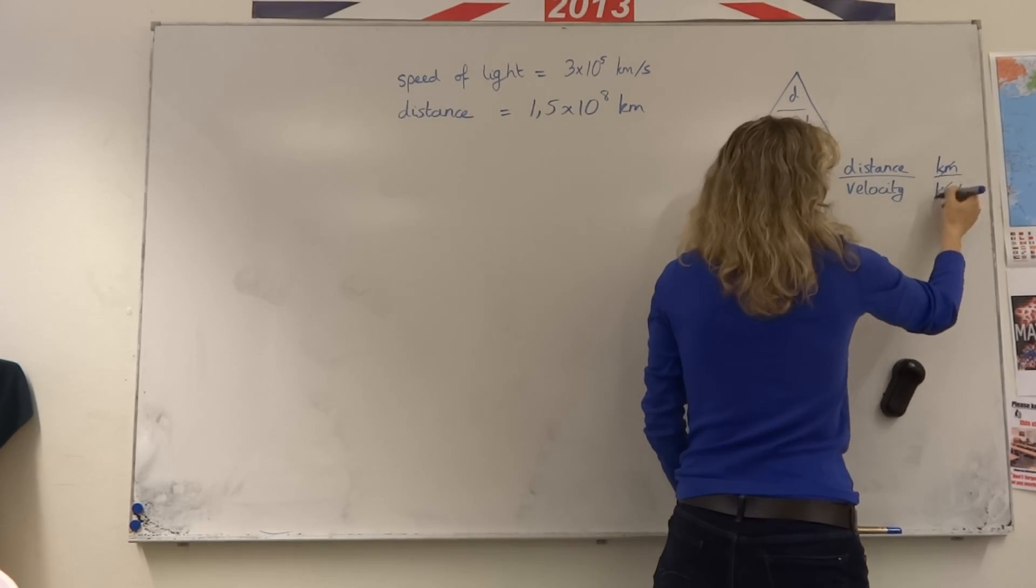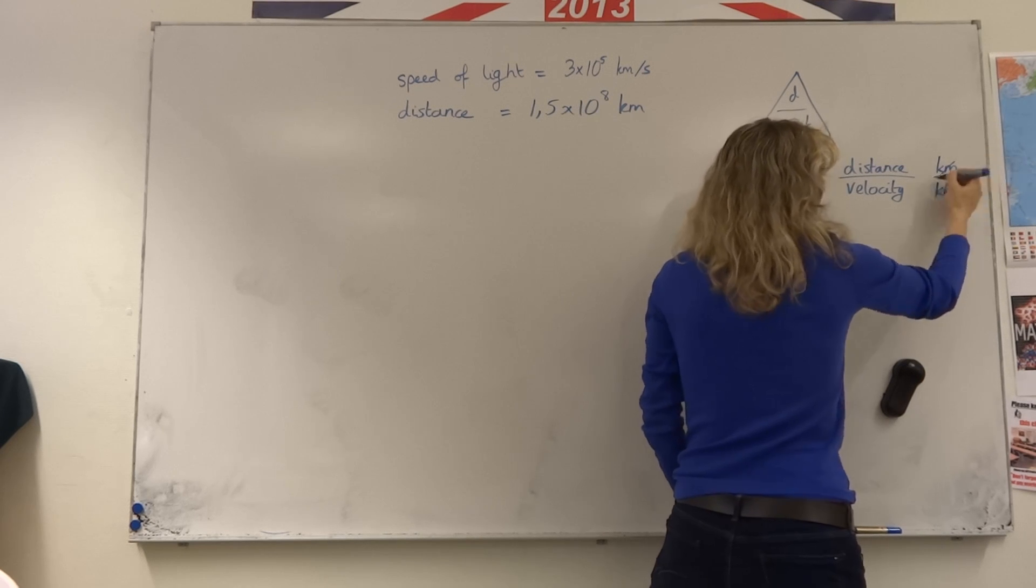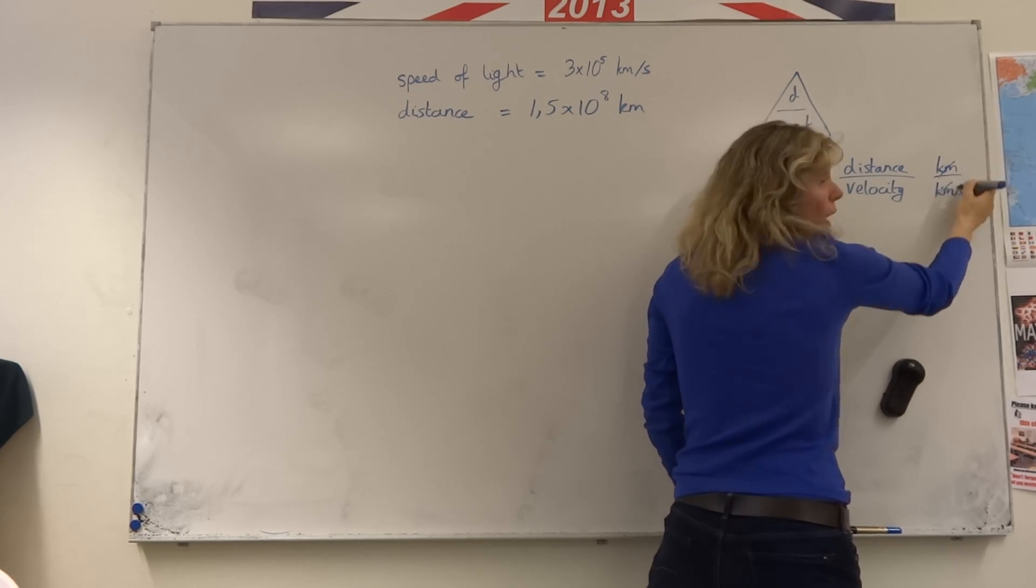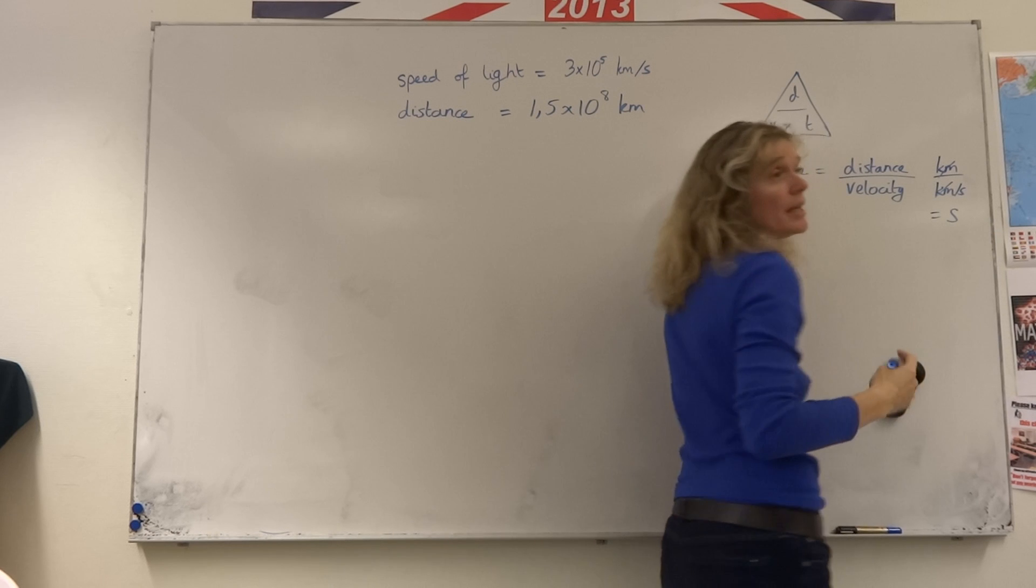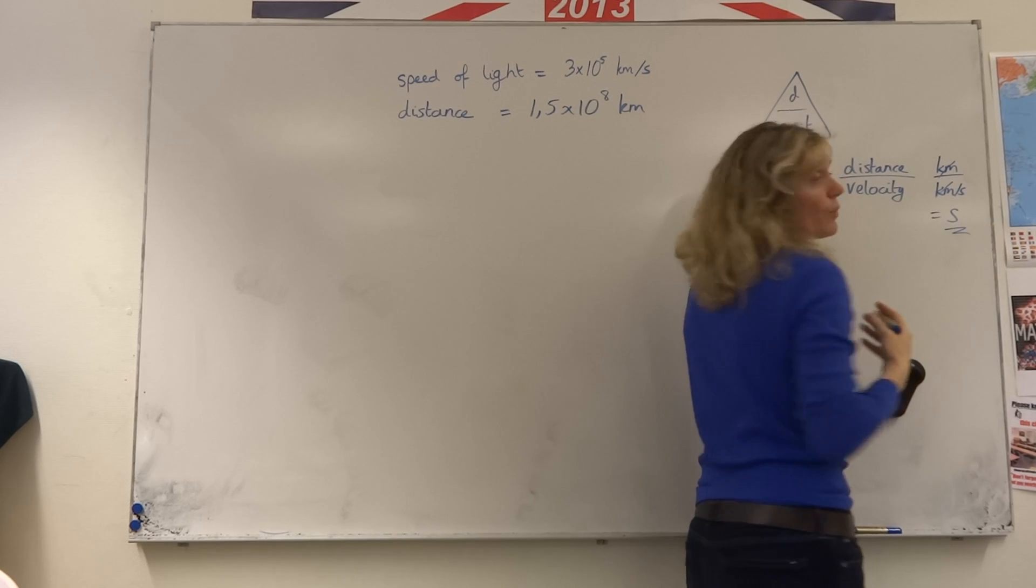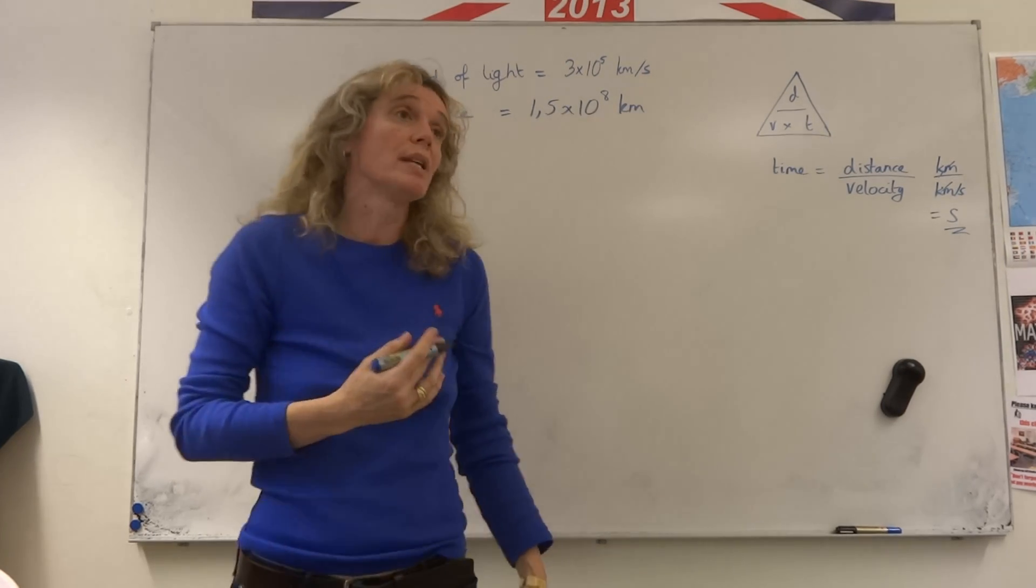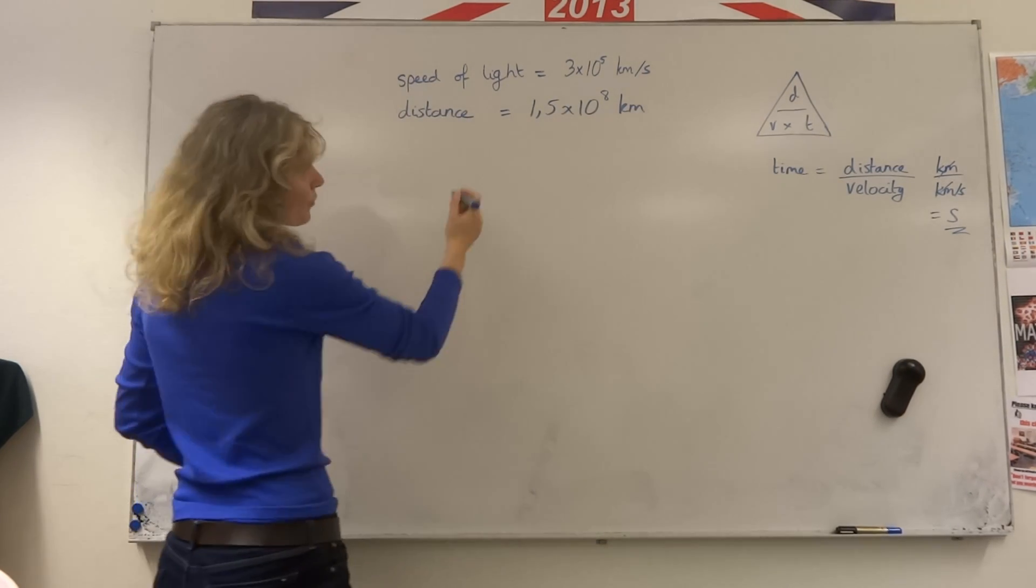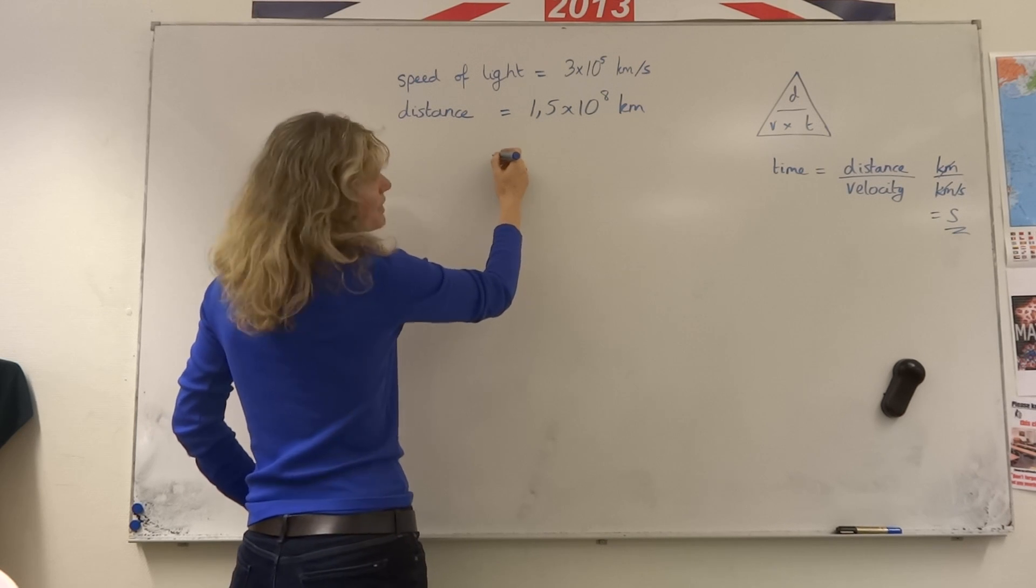Kilometers divided by kilometers disappears. Seconds divided twice is the same as it's going to be multiplied. So this double divide takes the seconds up to the top. So we know that the time answer we'll get will be in seconds.